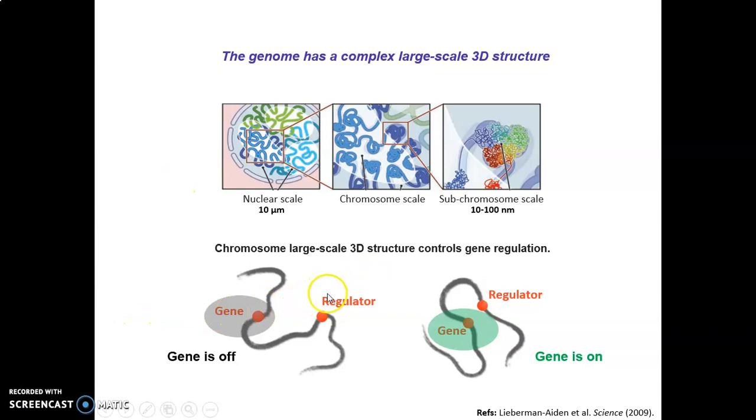Now, the basic idea of gene regulation is that if the regulator is spatially close to its target gene, as happens here on the right, then the gene is active, is on. Otherwise, as happens here on the left, if gene and regulators are far from each other, the gene is silent, is off.